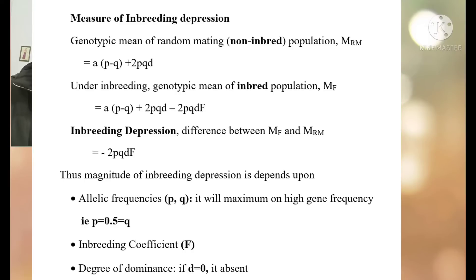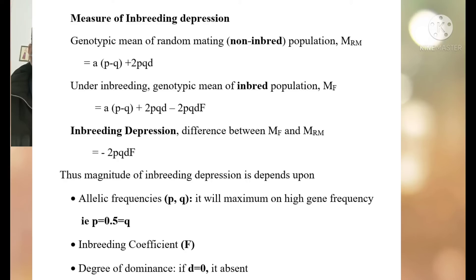Now I will discuss the mathematical calculation for inbreeding depression. The population mean for a random mating population is: A(P−Q) + 2PQD. Under inbreeding, the expression for the inbred population mean is: A(P−Q) + 2PQD − 2PQDF. Therefore, the inbreeding depression, which is the difference between the inbred population mean and the random mating population mean, equals −2PQDF.